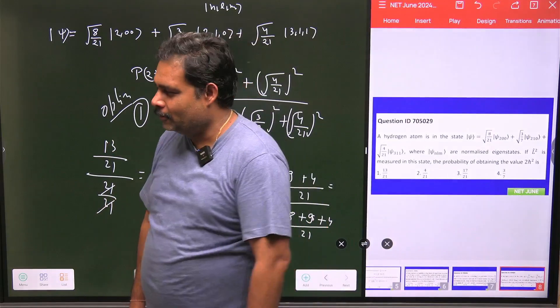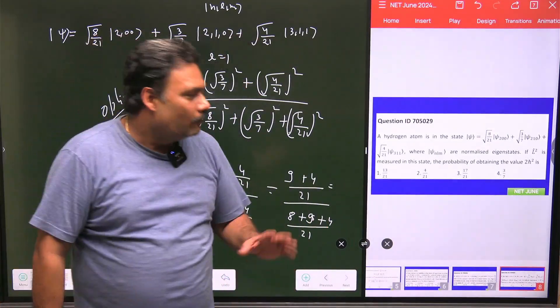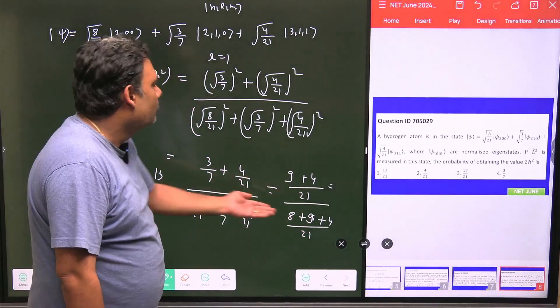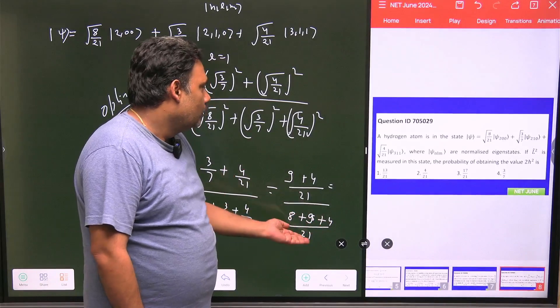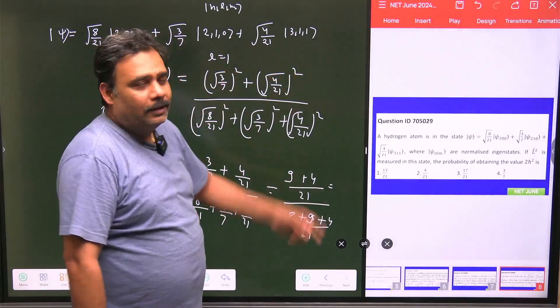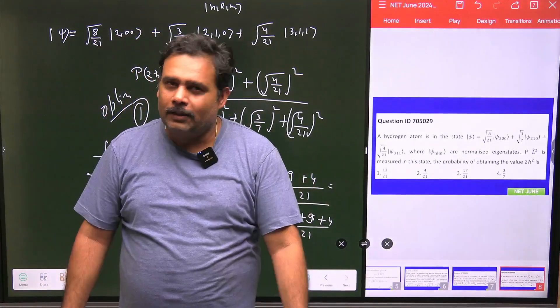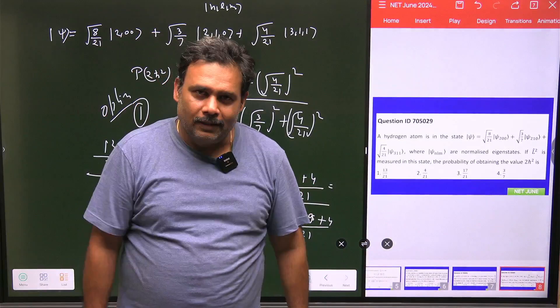Straightforward question. There is not a lot of calculation, but only you have to just be careful about doing this thing. And fortunately this is also normalized because the sum of the square of this coefficient is 1. So it is normalized and you can solve it very easily. Thank you.